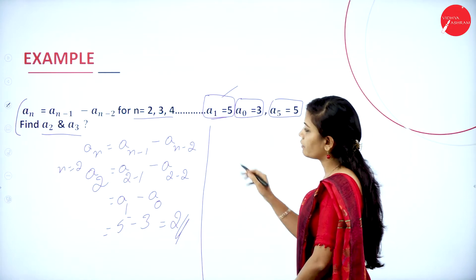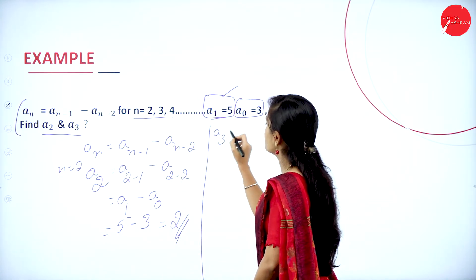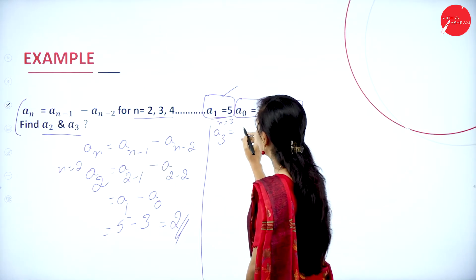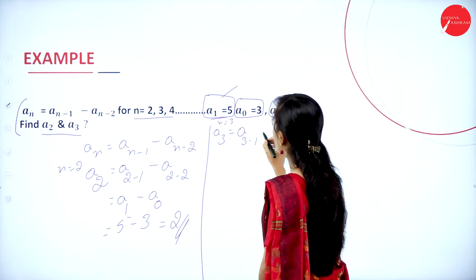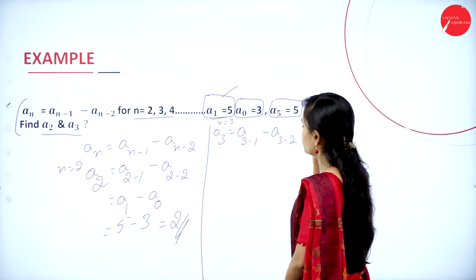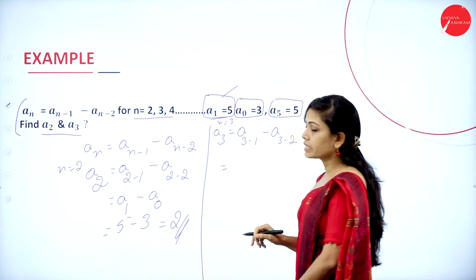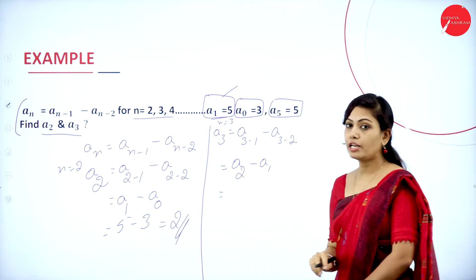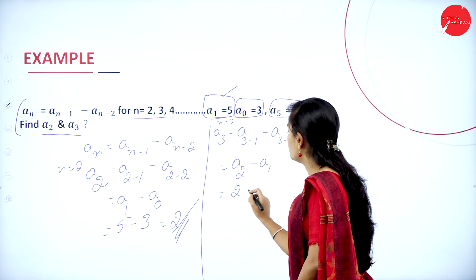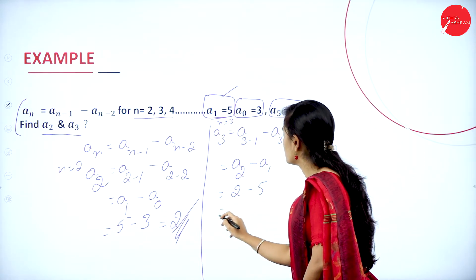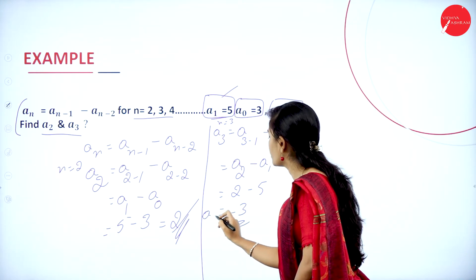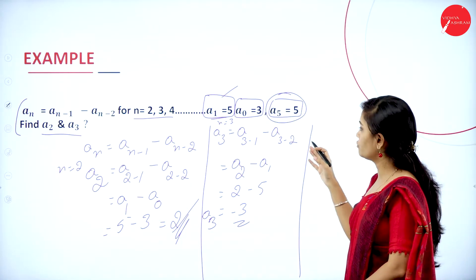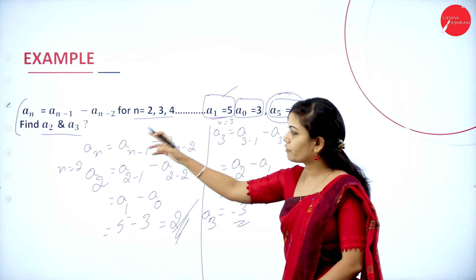Next, find the value of a3. Substitute n = 3: a3 = a3-1 minus a3-2 = a2 minus a1. a2 = 2 and a1 = 5, so 2 minus 5 = minus 3. Therefore a3 = -3. The value of a5 is given but not needed here since we are only finding a2 and a3.